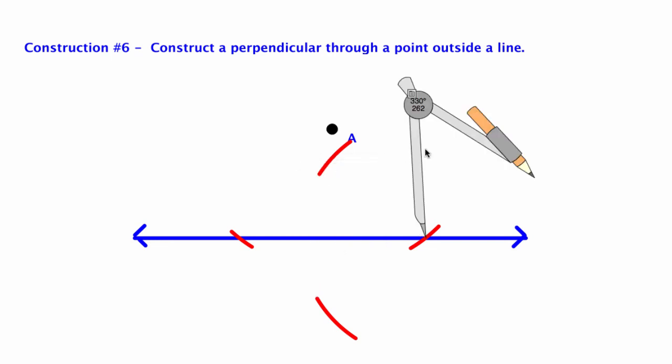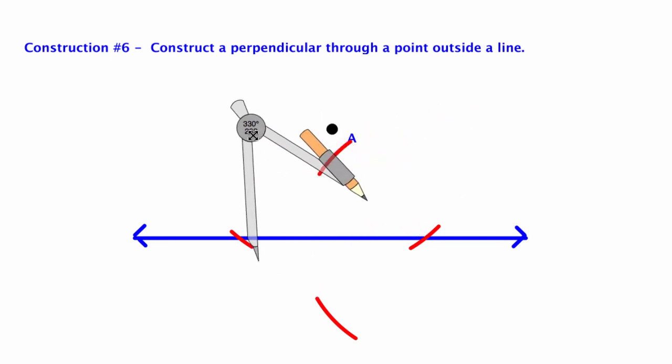Move the compass to the other spot and find the X. Swing above and swing below.